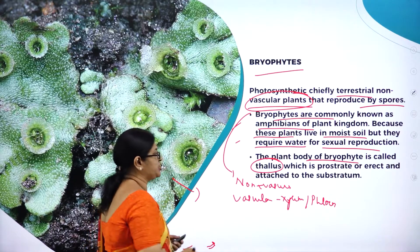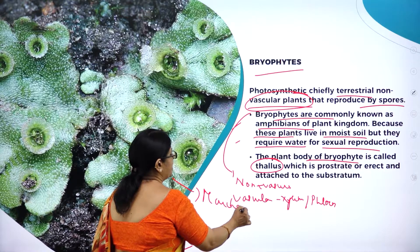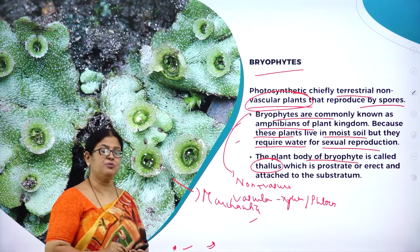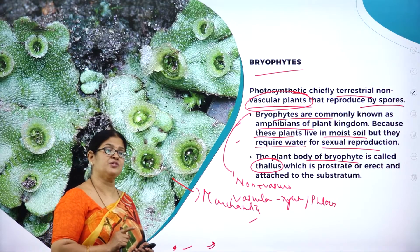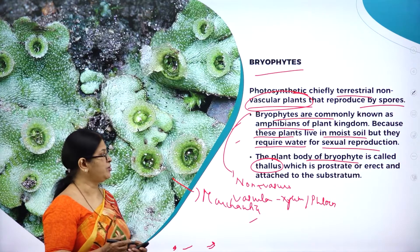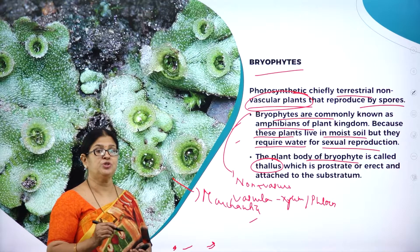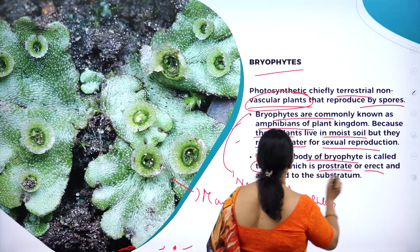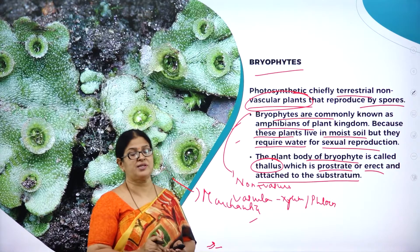The plant body of bryophyte is called thallus. Here you can see a beautiful picture of Marchantia. Marchantia and Riccia are two very important examples of liverworts; mosses also belong to bryophytes. The plant body is called thallus because you cannot differentiate it into root, shoot or leaf - it is just an undifferentiated mass of cells, which is prostrate or erect and attached to the substratum.